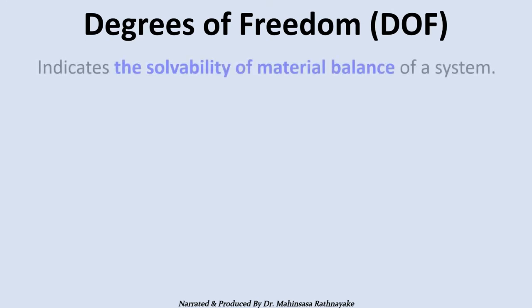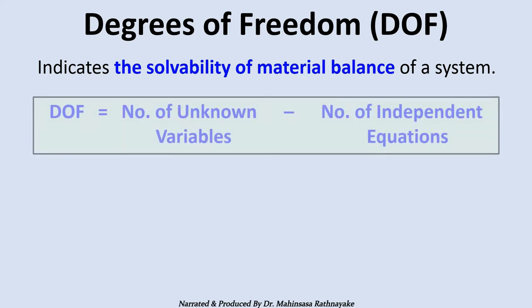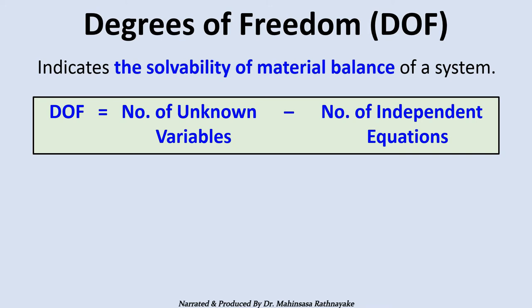The term degrees of freedom abbreviated as DOF indicates this solvability of material balance of a system. Degrees of freedom equals number of unknown variables minus number of independent equations that we can write for a system.